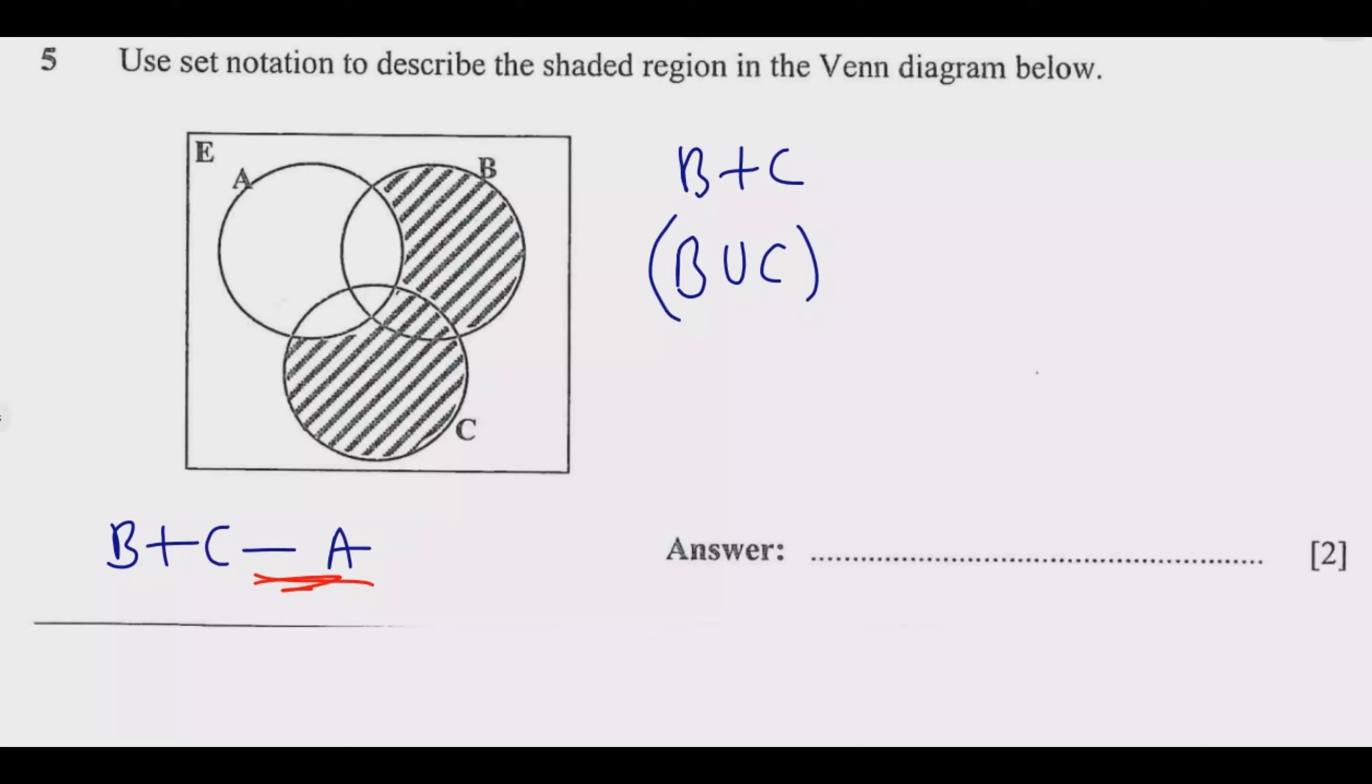That's what this minus means. You combine B and C, then we take out A. Now a minus in set notation is a complement. We are saying what is not or we take out. So what is not in A, that's A complement.